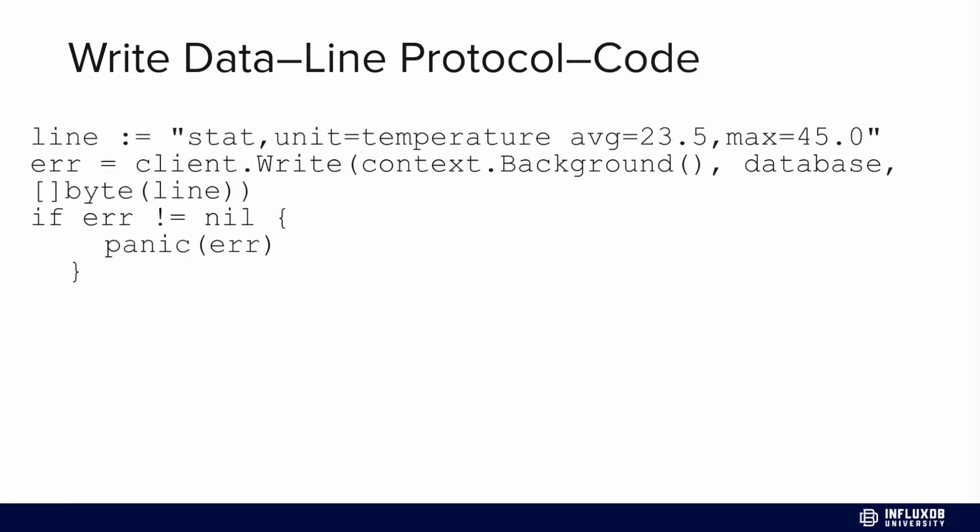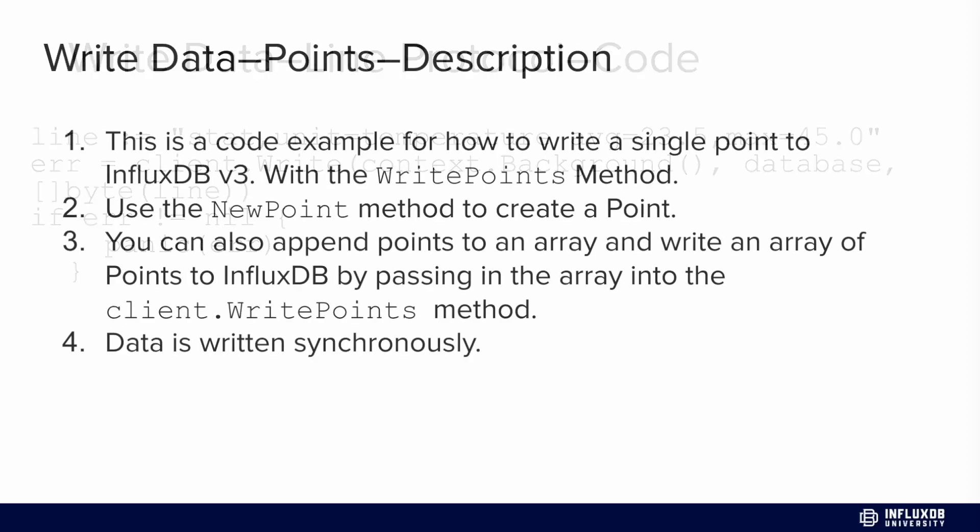Here's an example. This line that we're creating is line protocol. We have a measurement or table name called stat, then a tag called unit where the unit is temperature, and then we have two fields: an average temperature and a max temperature. You comma-separate your measurement or table name with your tags, and then there's a space and then comma-separated fields. We can write this point directly to InfluxDB by specifying what database we want to write it to and using the write method.